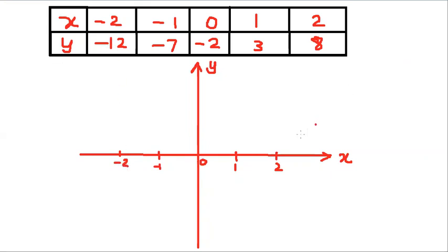For y, values range from minus 12 to 8. We want to divide into 8 parts for the positive side. Like this: this one is 8, this point is 4. Also we want to divide 12 parts with the same spacing as the positive side. 4, 8, minus 12 like this.